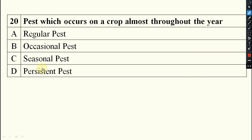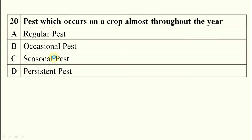Pest which occurs on a crop almost throughout the year — that will be your persistent pest. They will be occurring in the plant throughout the year.